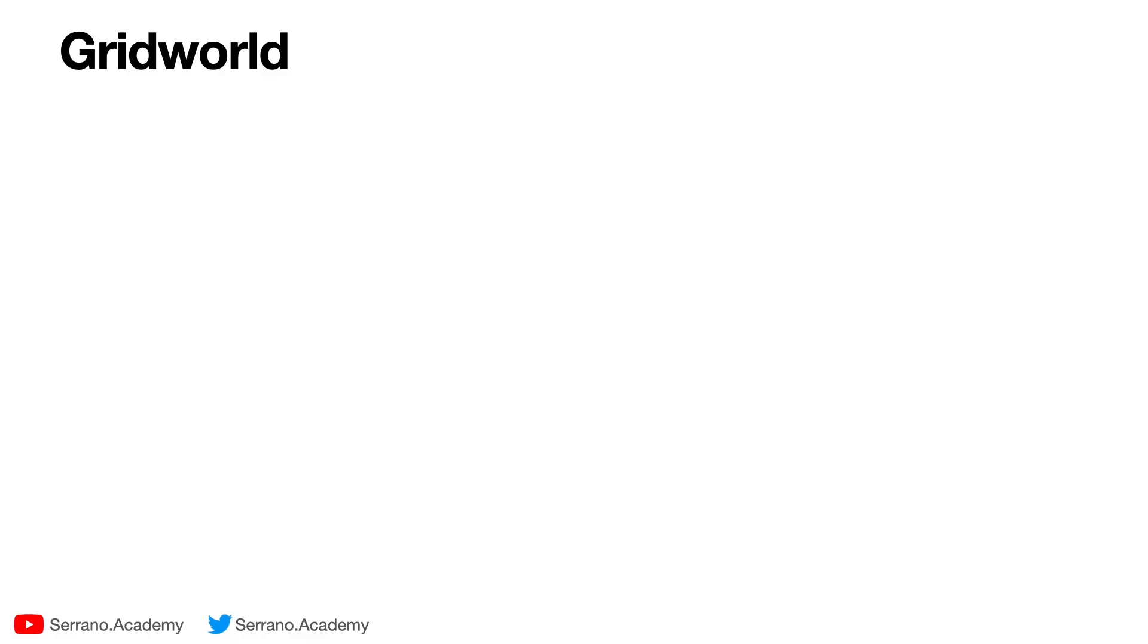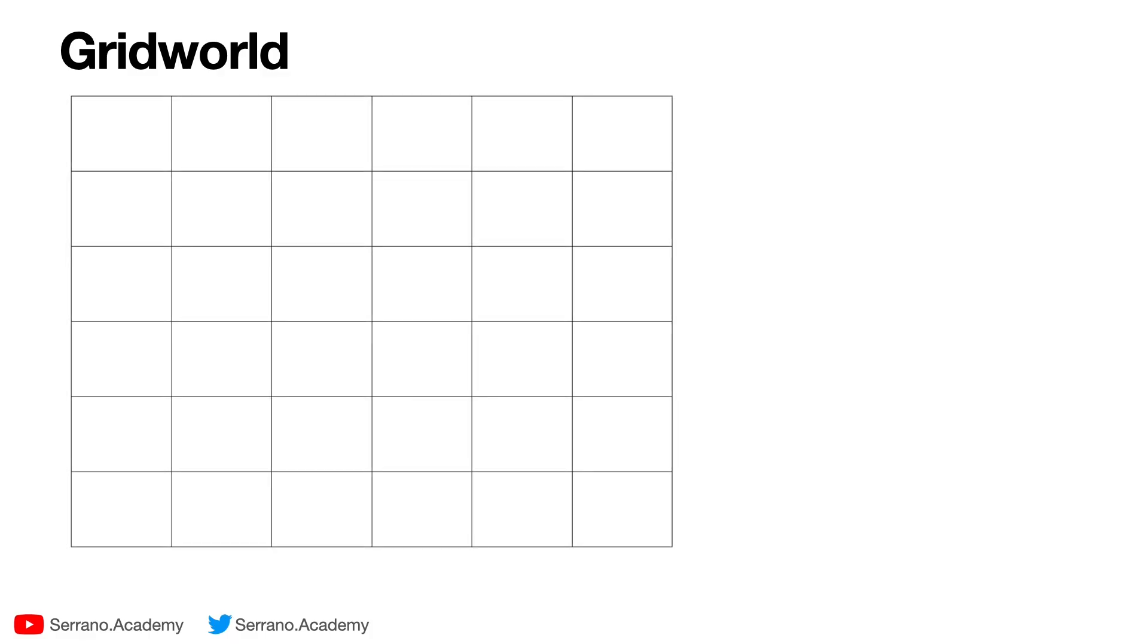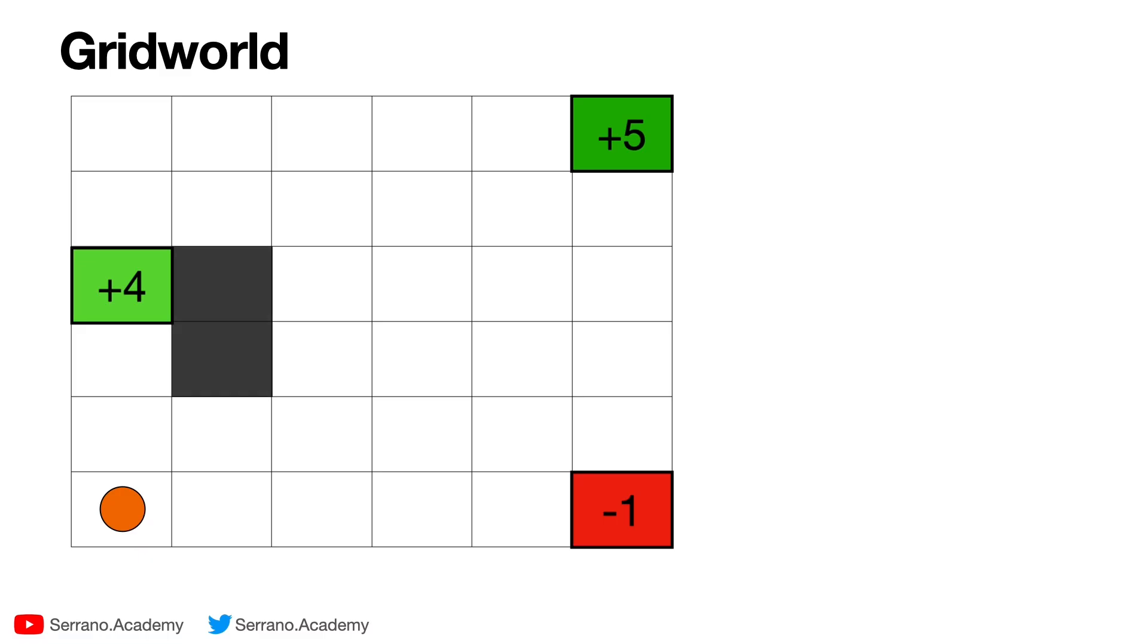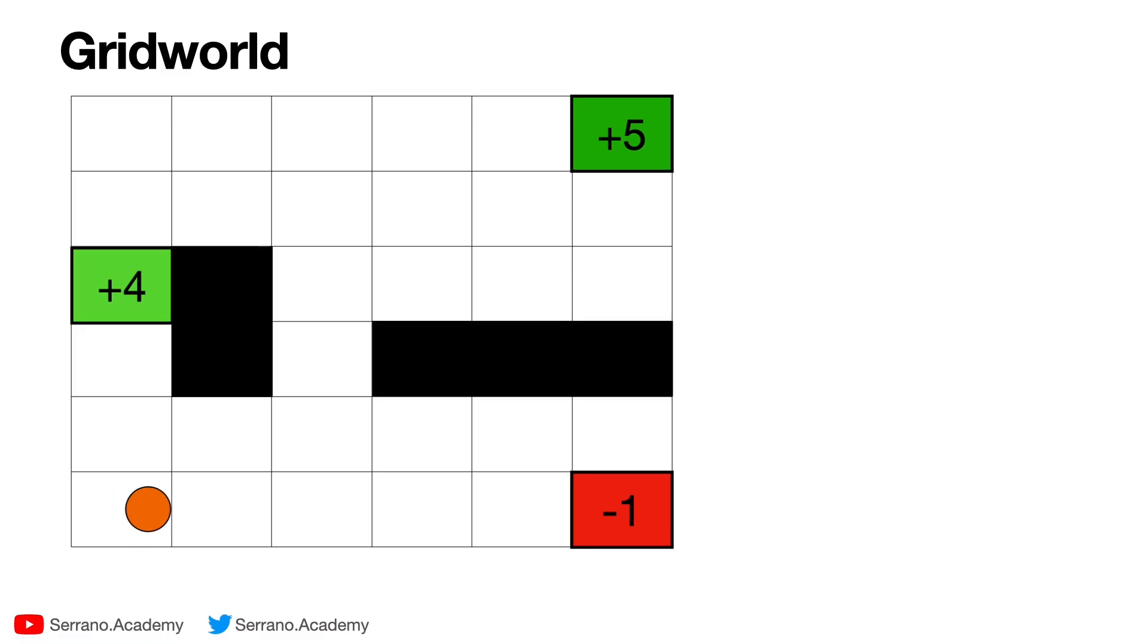So first, let's do a quick review of reinforcement learning. The scenario we've been using is a grid world which has an agent here that's going to move around. There are some places with money, and here there's a dragon that will eat the agent if it lands there. If you land on the money over here you get five points, over here you get four points. If you're eaten by the dragon you lose one point, and there are also some barriers over here. So the idea is to get the agent to move around and do as best as possible.